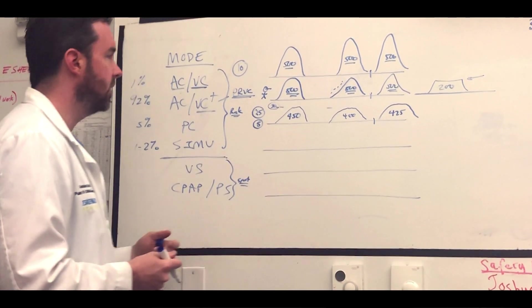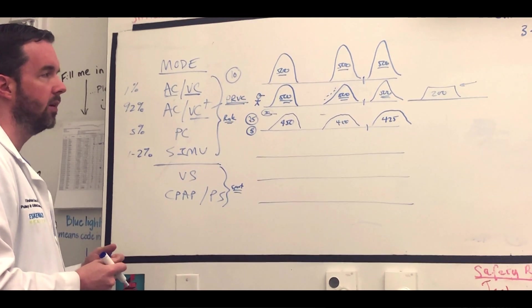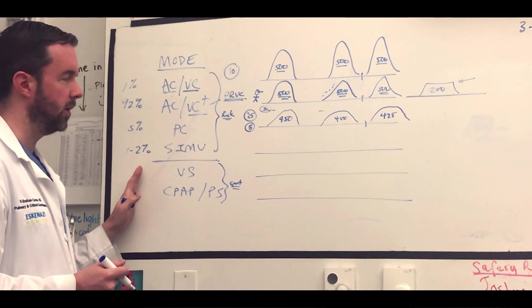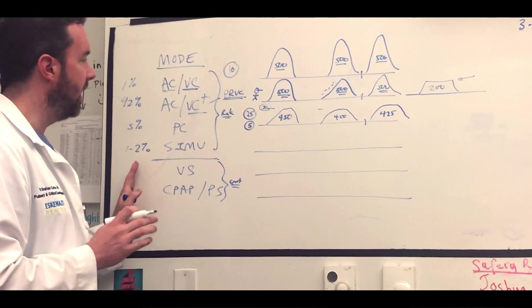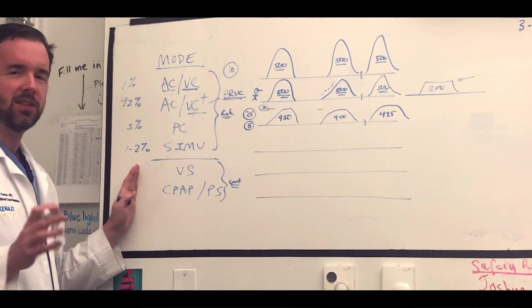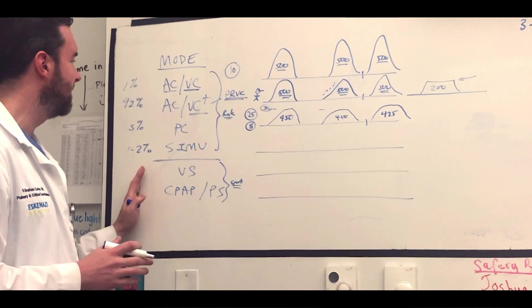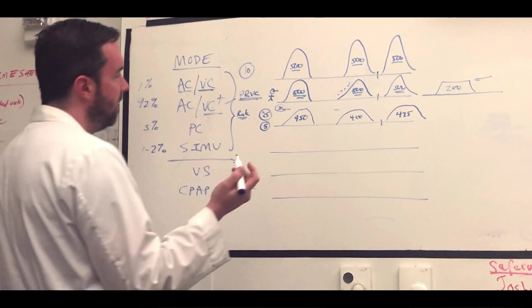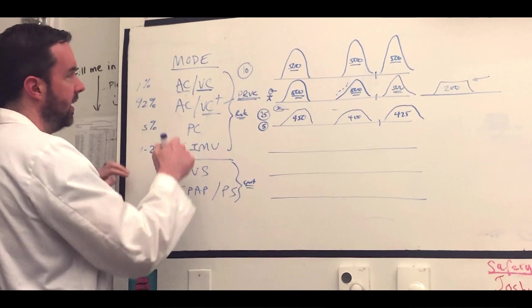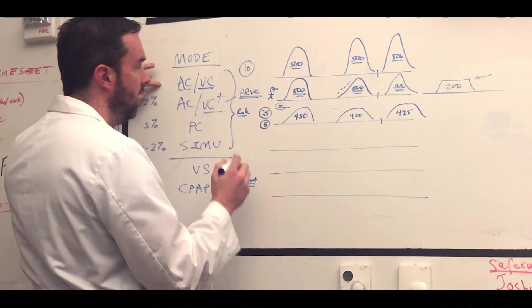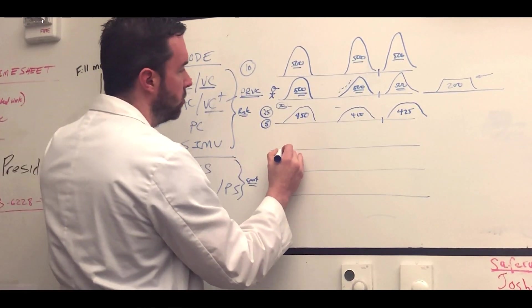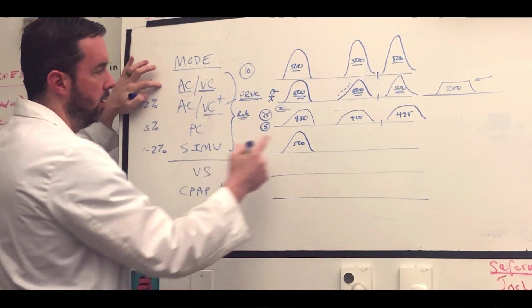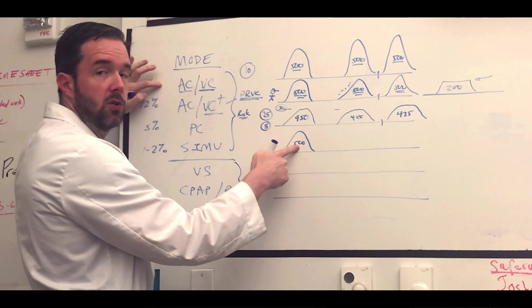SIMV is the last one. We don't use SIMV a lot in the ICU, but my anesthesiologists and maybe some of my surgeons who are watching might see it used more in the OR. SIMV works a lot like ACVC up here. Again, it's a rate mode. There's one important exception. I'm going to try to draw this similar to the top one. You take a breath, you get the 500 that you've set.